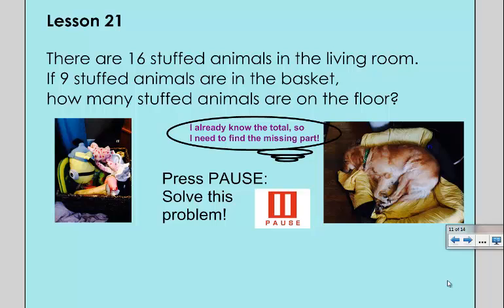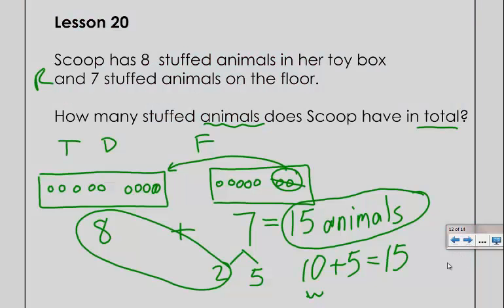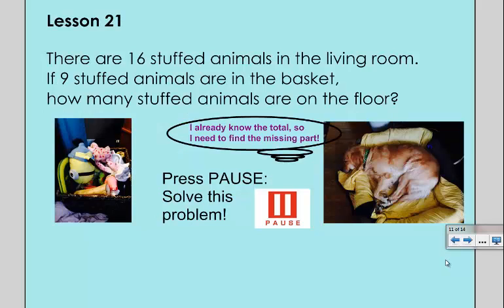Scoop thinks I already know the total, so really I'm just looking for the missing part. So this actually really reminds Scoop kind of of yesterday's question where we wanted to find a total. Well the difference is today we already have the total. So it looks like we're looking to find how many are left. Very similar questions, different ways of doing them.